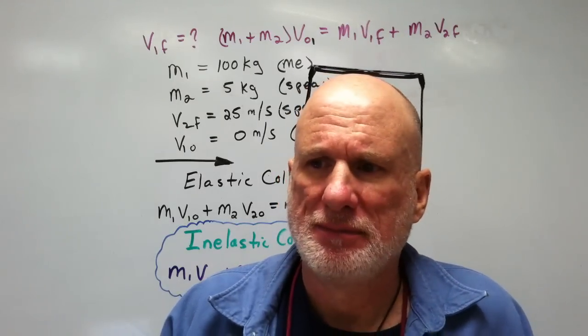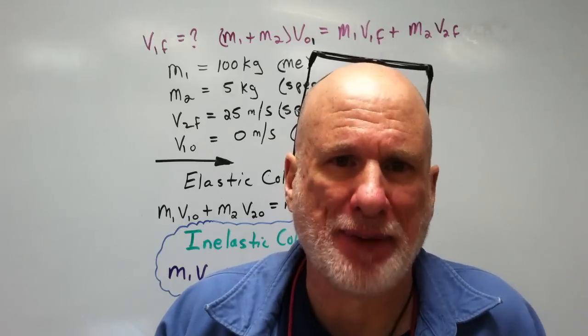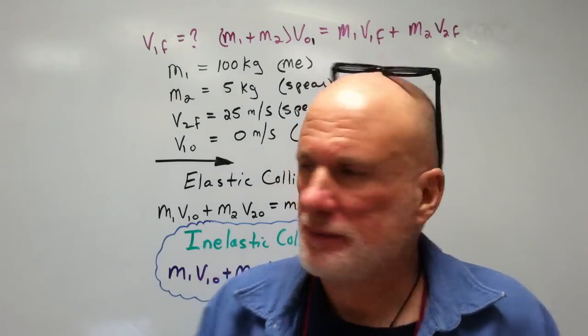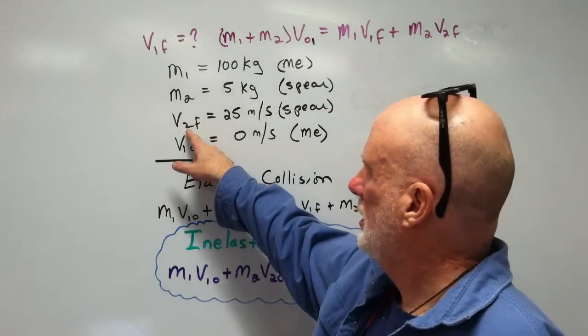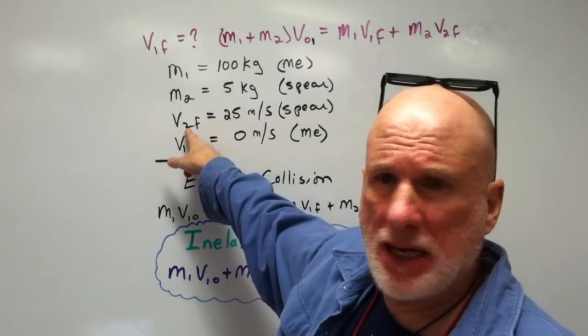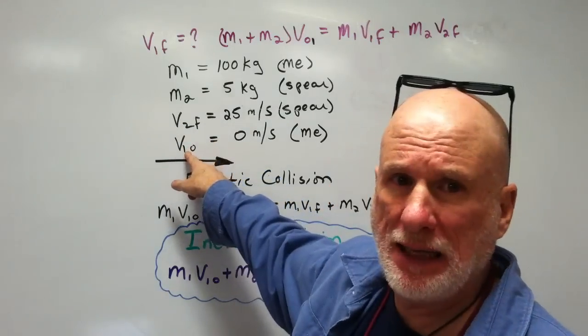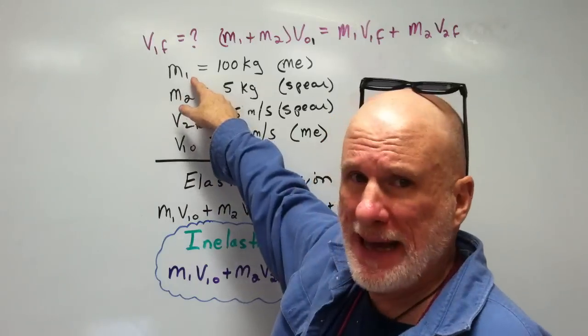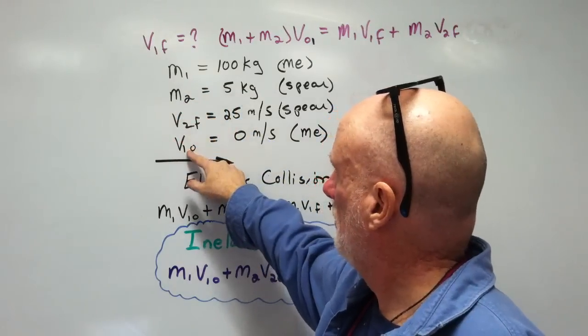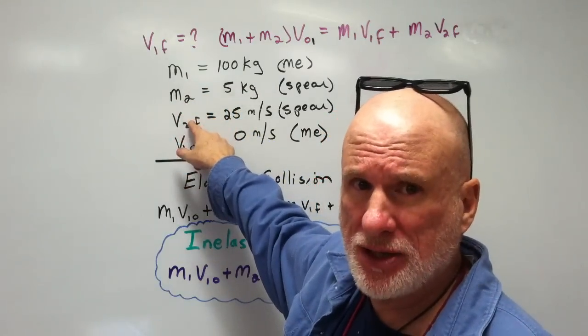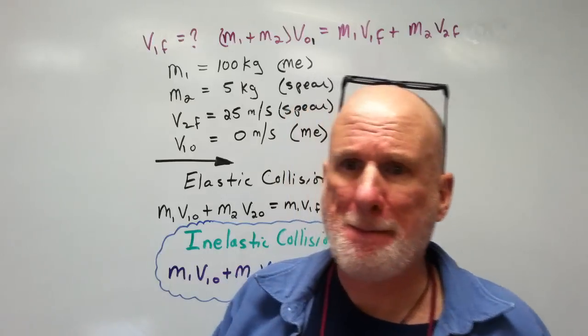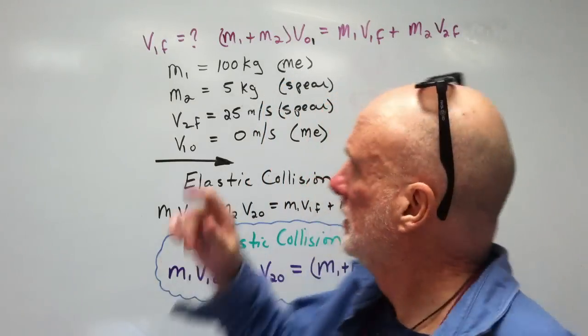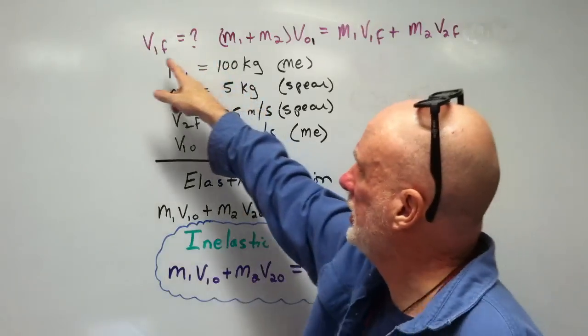miles an hour, never happened, too dangerous. But anyway, two is the spear, one is me, two is the spear, one is me. My mass, the spear's mass, my velocity, the spear's velocity. Now this is the equation I'm looking